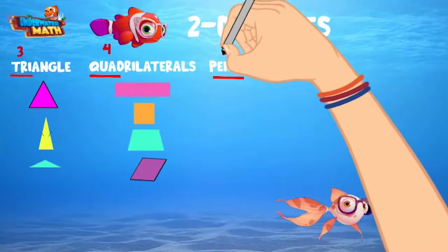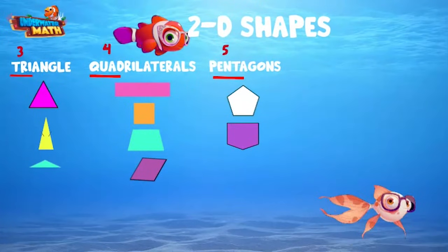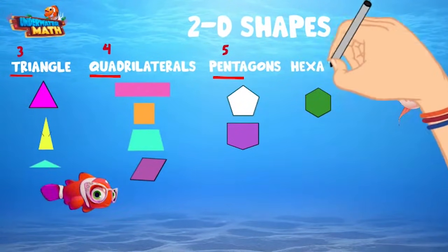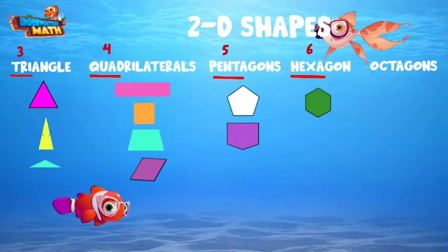Then we have the five-sided figures. This is called a pentagon because penta means five. I'm sure you can guess our next shape. It has six sides, making it a hexagon.